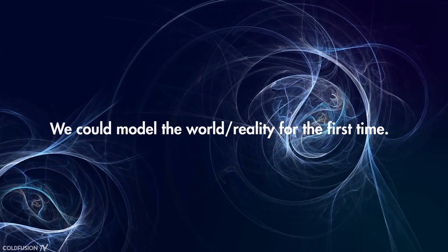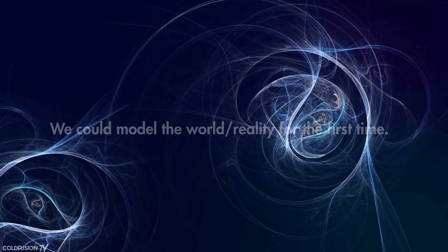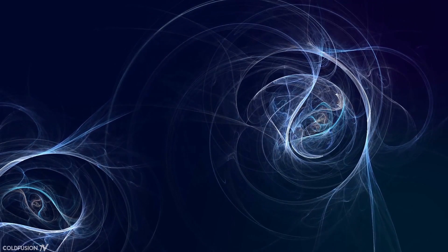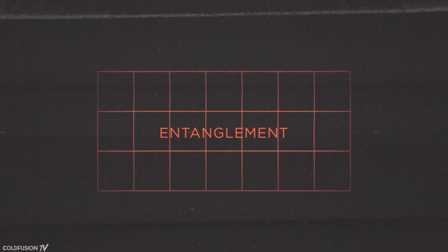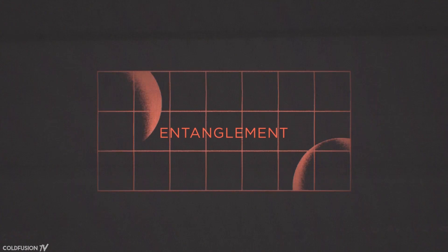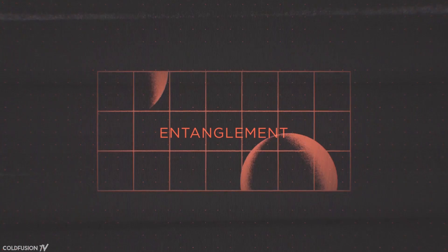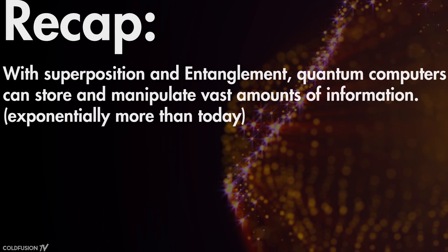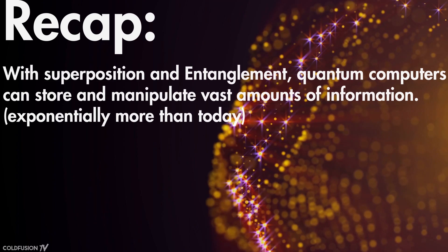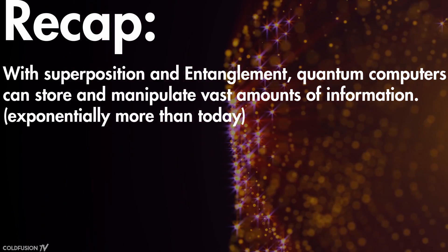To get that exponential processing speed up, the qubits must be able to communicate. The fate of all qubits are linked together in a process called quantum entanglement. Entanglement is just a relationship between two superposition particles. The state of one determines the state of the other. So basically all this means that in quantum computers, entanglement along with superposition helps the system store all possible solutions at once.